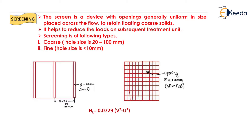The first method in primary or preliminary treatment is screening. A screen is a device with openings — generally uniform in size — placed across the flow to retain floating coarse solids. We use screens to remove larger particles such as stones, grates, dead bodies, and plants. Screening helps to reduce the load on subsequent treatment units including the grit chamber, detritus tank, sedimentation tank, activated sludge process, and all other processes following screening.